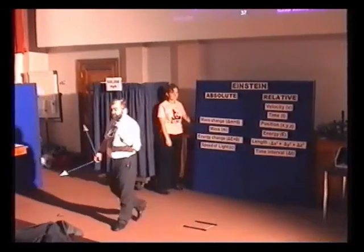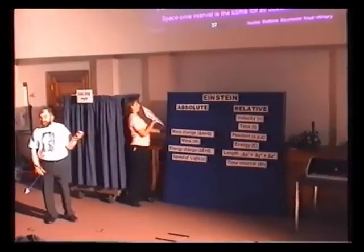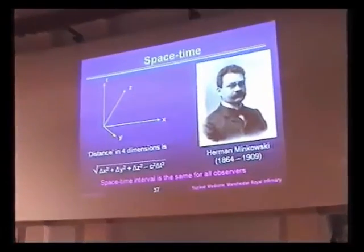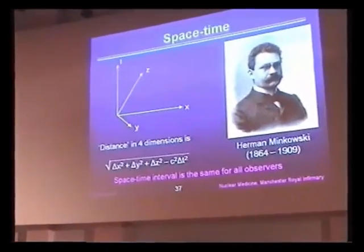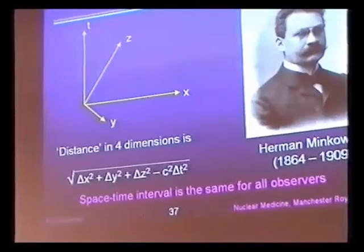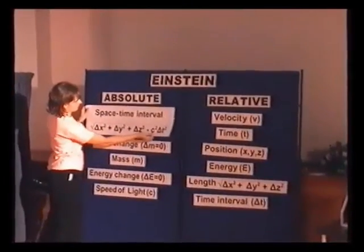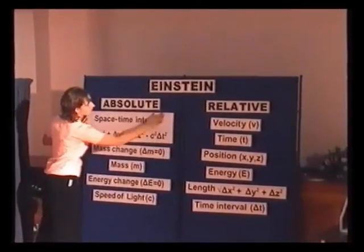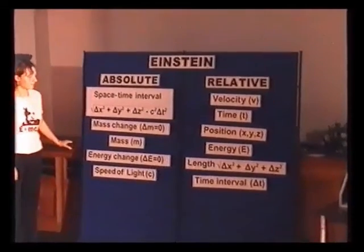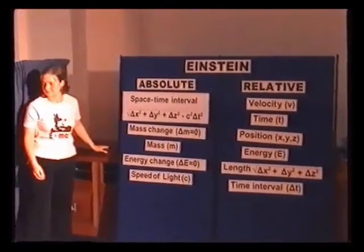And Minkowski showed that there was a distance between two points, which you call the space-time interval: ΔX² + ΔY² + ΔZ² − c²ΔT², which is the same for all observers. That is an absolute quantity. So that replaces the relative length and time with an absolute space-time interval that is the same for all observers.